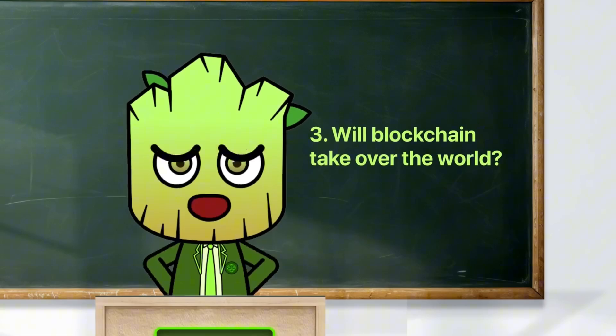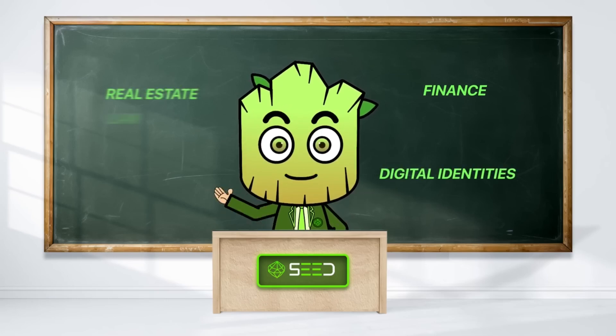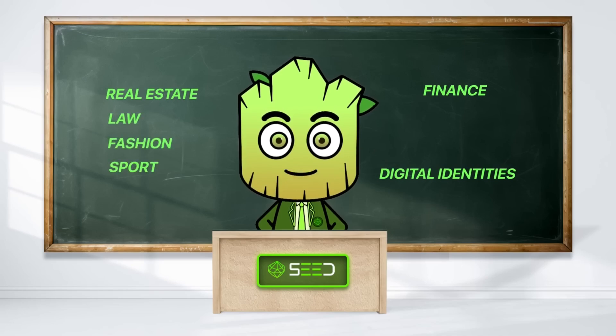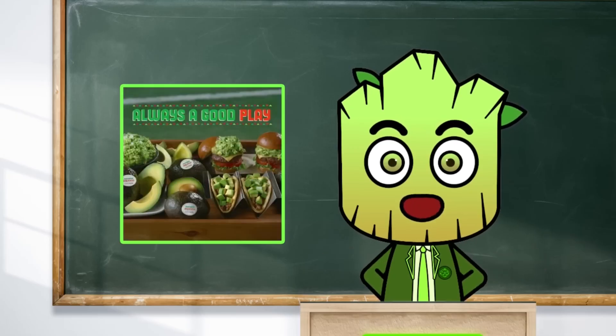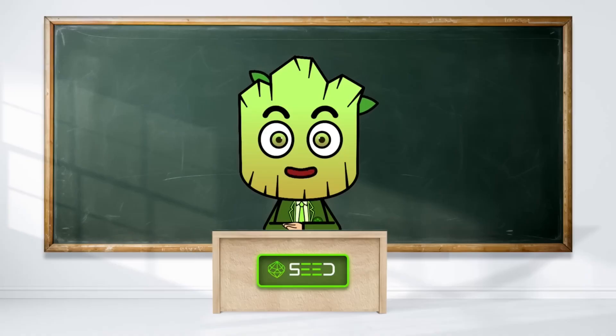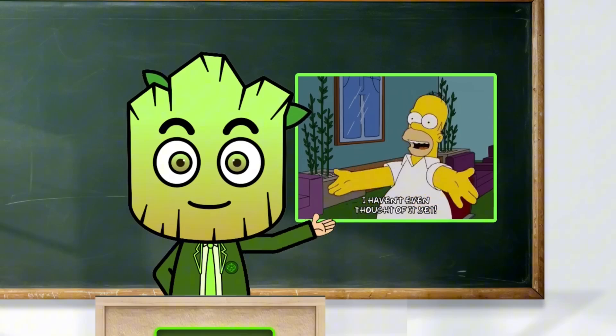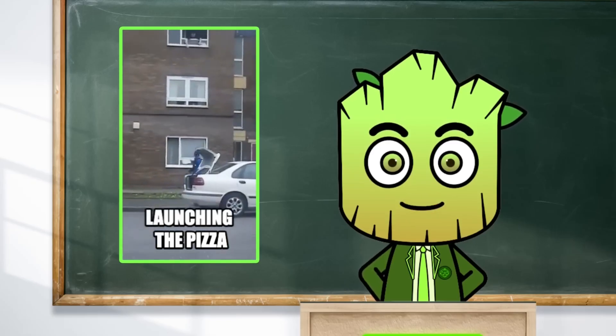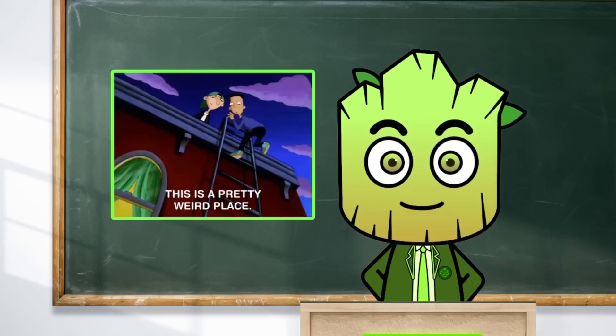So, is blockchain going to take over the world? Maybe. It's already shaking things up in finance with cryptocurrencies, but it could be used for everything from digital identity, real estate, law, fashion, sport, to traceability like making sure your avocado came from the farm in Mexico. And who knows, in a few years, we might all be using blockchain for things we haven't even thought of yet. Like making sure your pizza delivery actually came from your favorite pizzeria, and not some weird knockoff place.